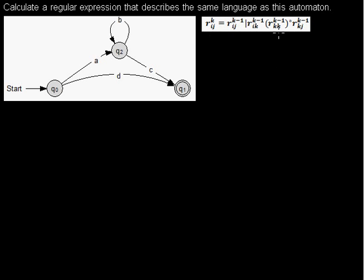We can use this formula to calculate a regular expression for an automaton. R means it's a regular expression. I is where the regular expression starts in the automaton. J means in which state you end. And K tells you that you are allowed to go through states up to that number.